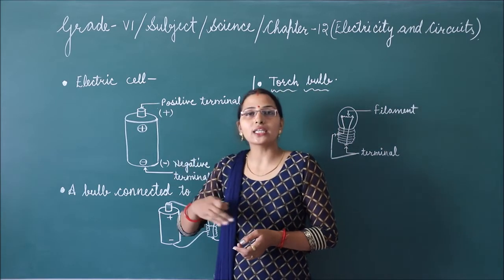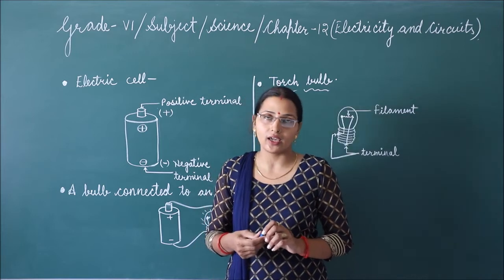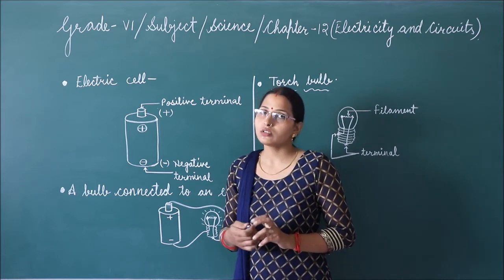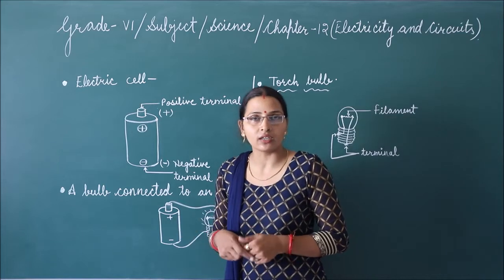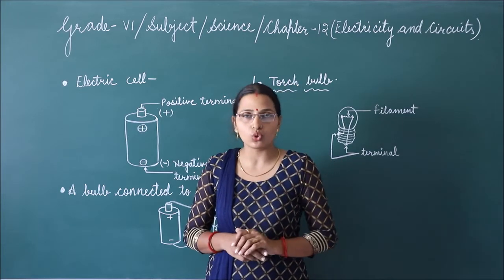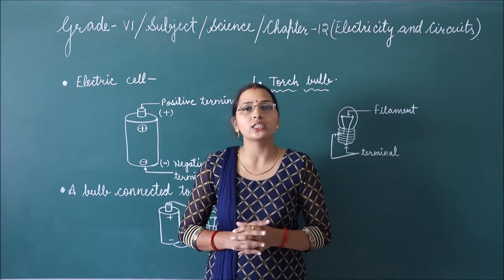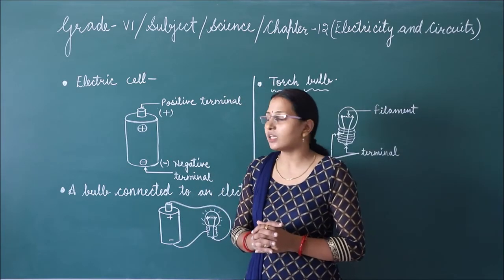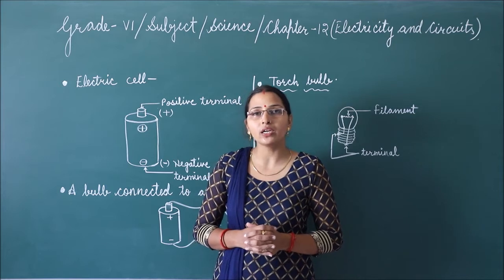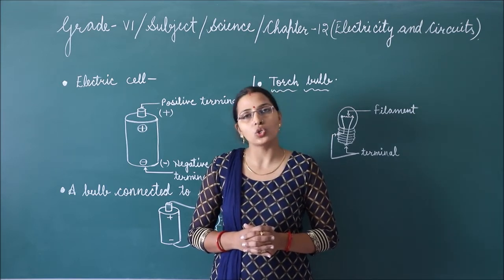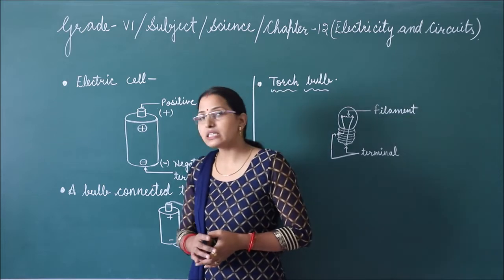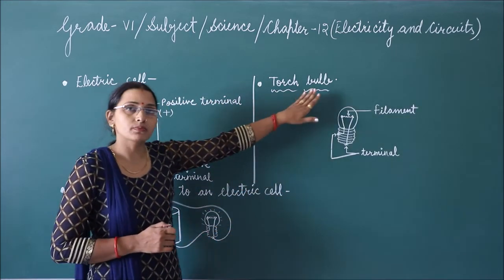Now, if two or more cells are connected together, a battery is formed. We often call a torch battery because it uses two or more cells inside it. So a battery is a combination of two or more cells.